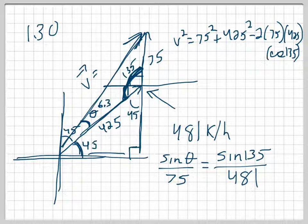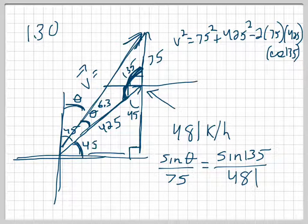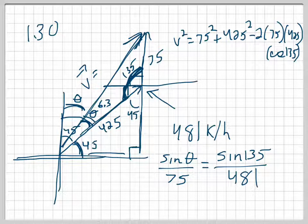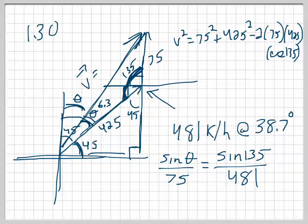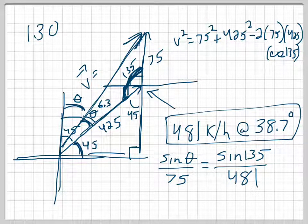How do I figure out where this vector is? I want the angle from north. I know it's 45 from here to here, and it's 6.3 back from there. So I can just take 45 minus 6.3 and I get about 38.7 degrees. So the answer is 481 kilometers per hour at 38.7 degrees. That is my answer for this problem.